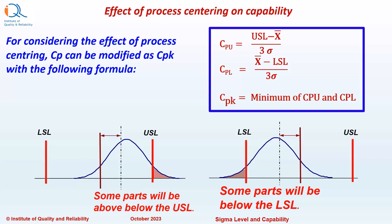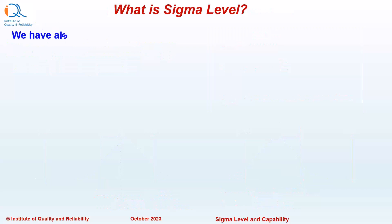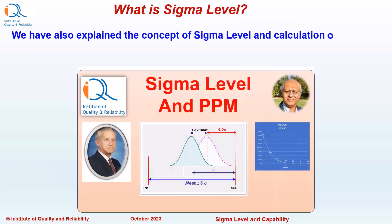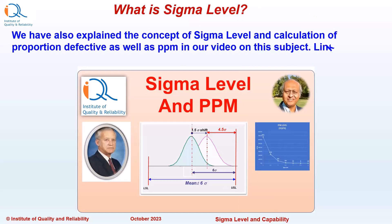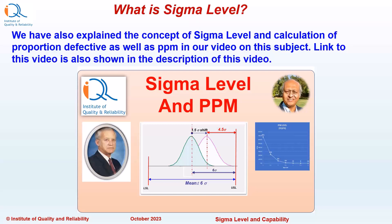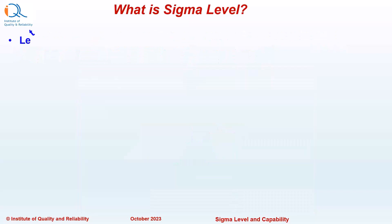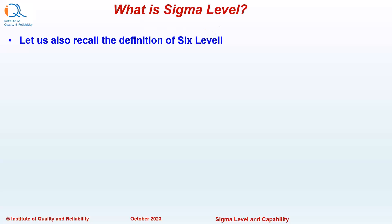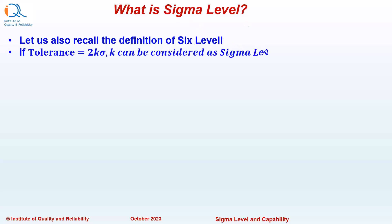As mentioned earlier, the link to this video is mentioned in the description. We have also explained the concept of Sigma Level and calculation of Proportion Defective as well as PPM in our video on this subject. Let us also recall the definition of Sigma Level from our previous video: if Tolerance equals 2 times K Sigma, then K can be considered as the Sigma Level of the Process.